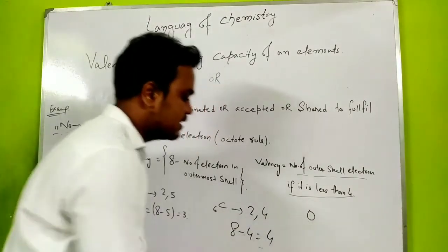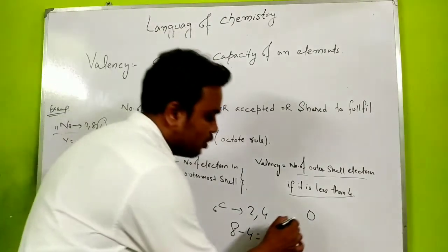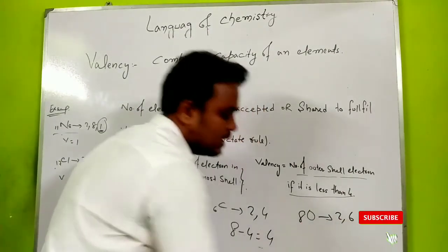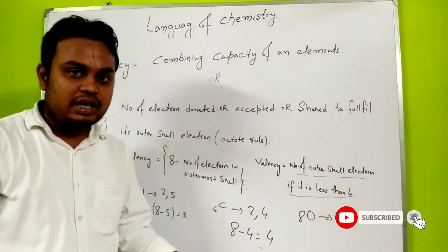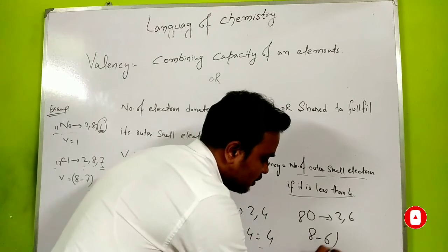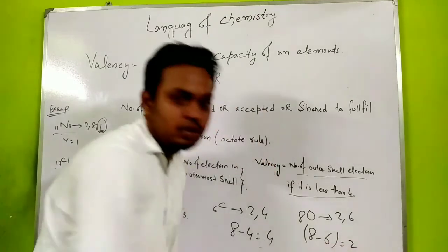Take Oxygen. What is the atomic number? It's 8, so electronic configuration is 2 and 6. Last shell contains more than 4 electrons, so we do 8 minus 6. Valency will be 2.